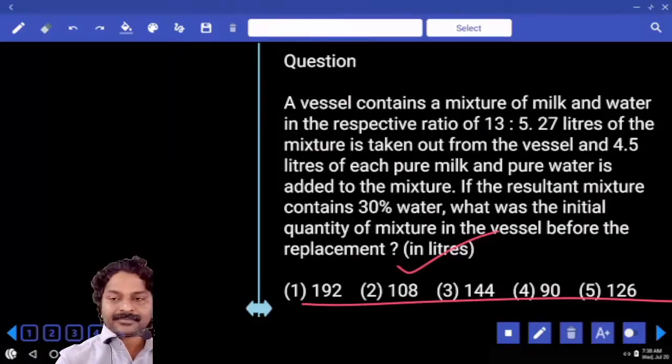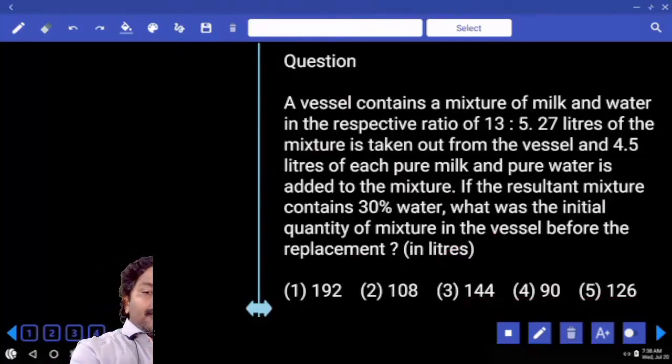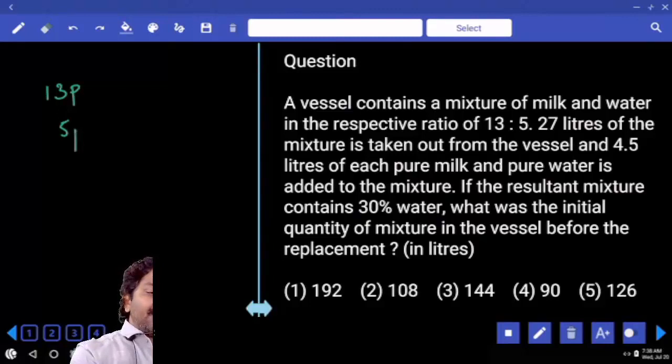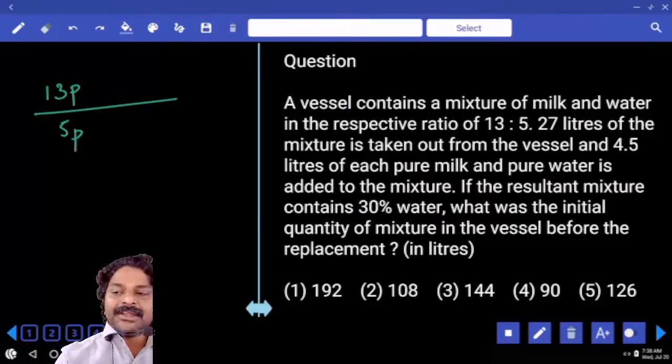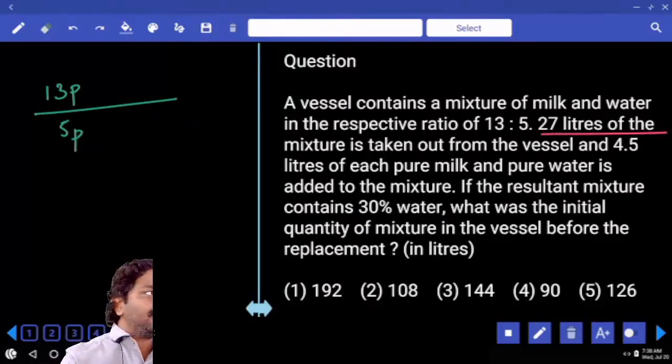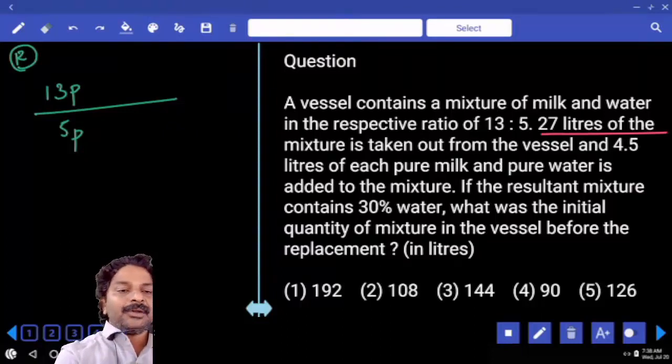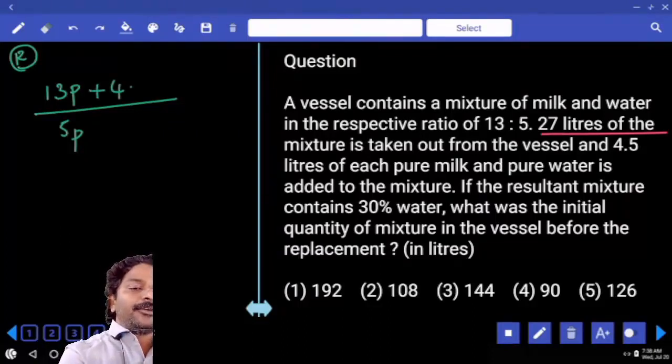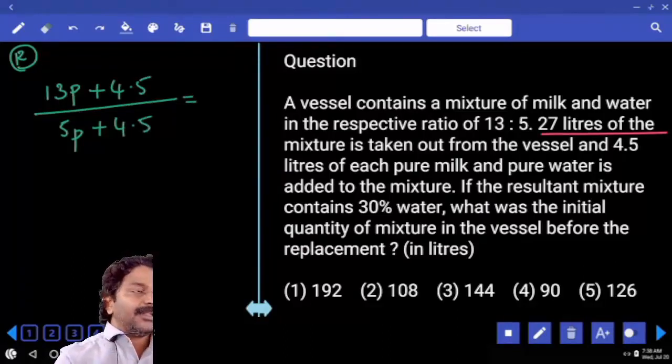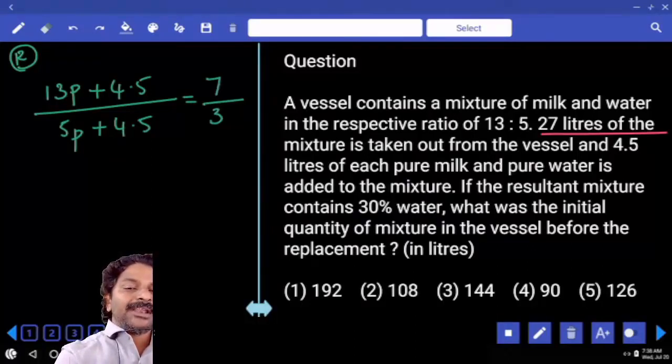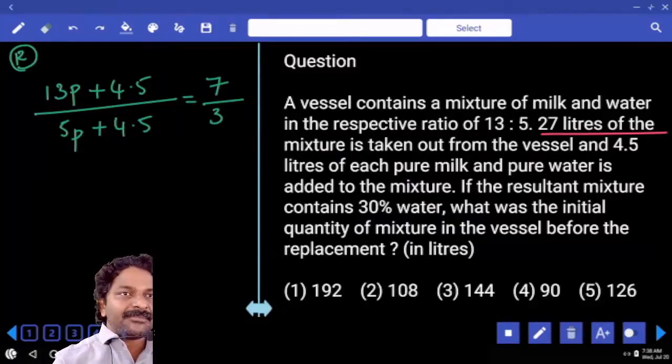Otherwise, total quantity is 13 parts and 5 parts ratio is divided. 27 liters is taken out. Let us assume remaining quantity also should be in the same ratio 13:5. Now to this we are adding 4.5 liters of both milk and water each. Then they said water is 30 percentage, then milk becomes 70 percent. That is in the ratio 7:3 only.